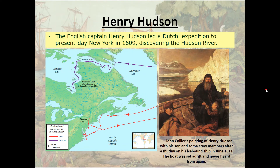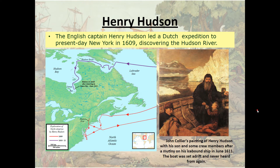Henry Hudson, the English sea captain sailing for the Dutch, led an expedition to present-day New York. In 1609 he discovered the Hudson River, which empties into what is today New York Harbor. Then in 1610–1611 he sailed on another expedition for the Dutch and discovered what is now named Hudson's Bay. His crew mutinied against him during this journey, sending him and several loyal crew members — including his young son — adrift in a boat and sailed back to Europe. This painting by John Collier depicts Hudson with his young son and crew members after the mutiny on his icebound ship in June 1611. Hudson and those adrift with him were never seen or heard from again and almost certainly died of exposure.